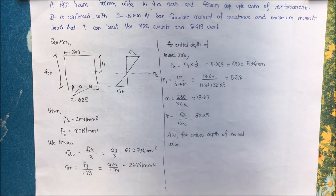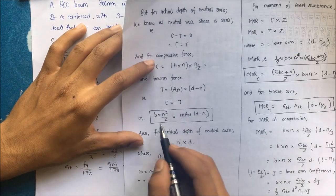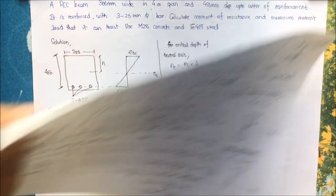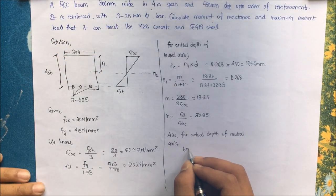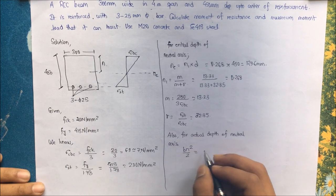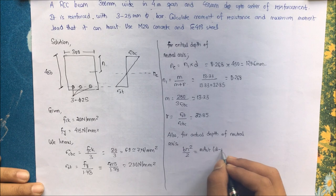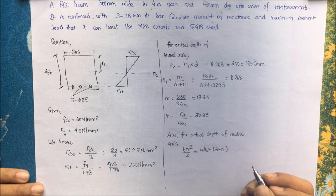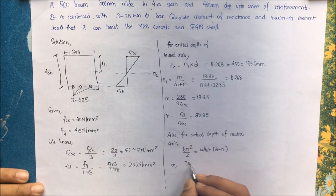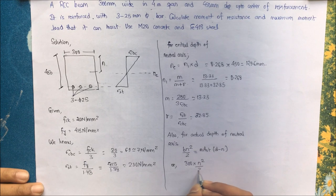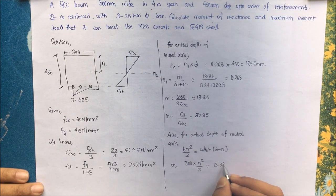We don't know whether it is a balanced or over-reinforced or under-reinforced section. Using this formula we get BN square by 2 is equal to M into Ast. This is just a transformation, transform area method. BN square, we have B as 300 section width into N square by 2, N being the actual depth. 13.33 is the modular ratio.